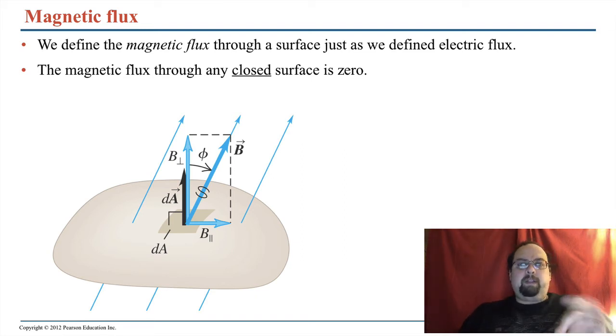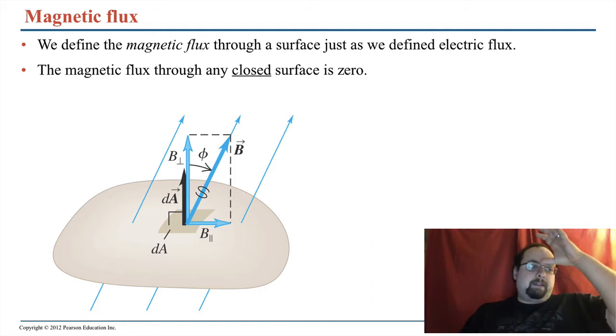The magnetic flux through any closed surface is zero. If you remember, Gauss's law said the magnetic flux through a surface was equal to Q enclosed over epsilon naught. But for a magnetic field, it's always zero. So this is a direct consequence of there being no magnetic monopoles. You've always got to have a north and south pole.